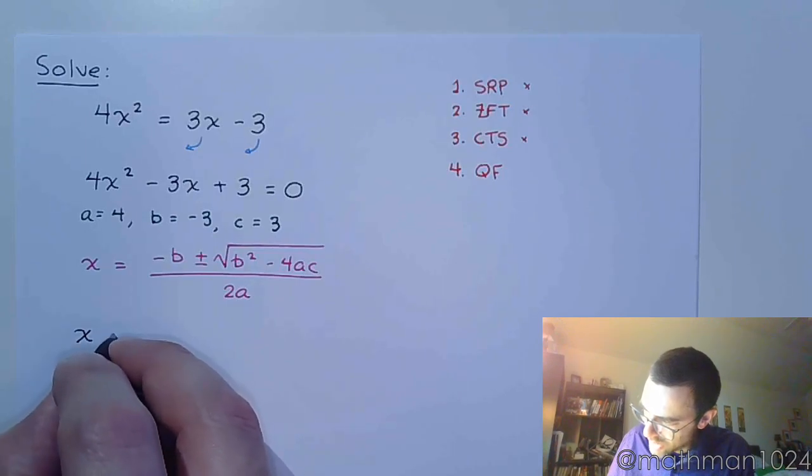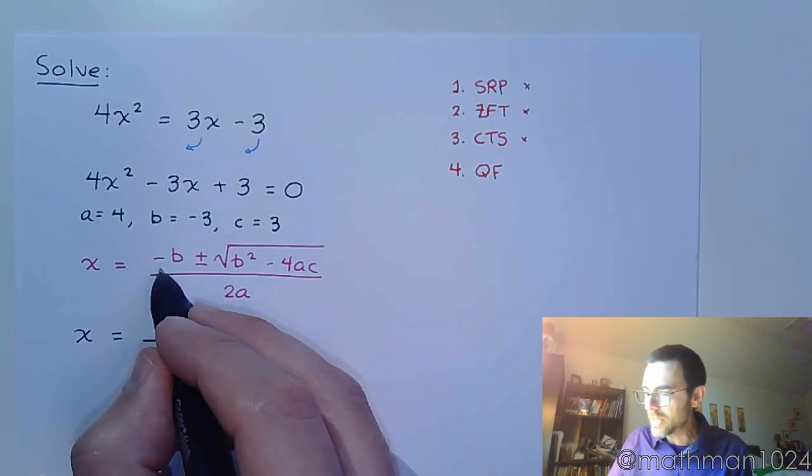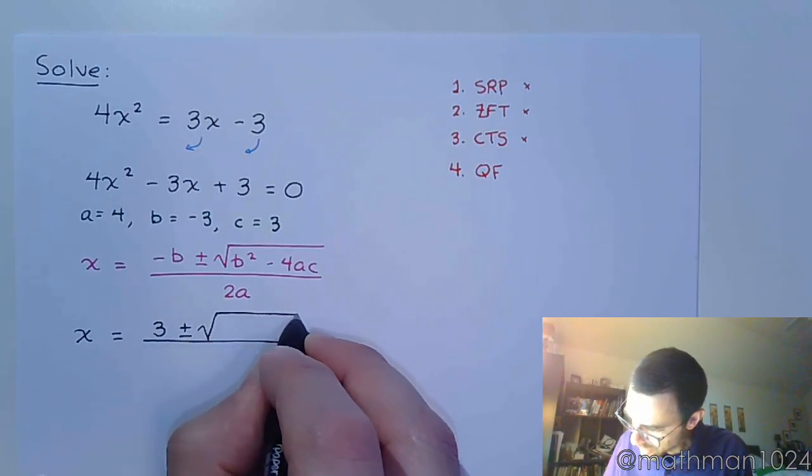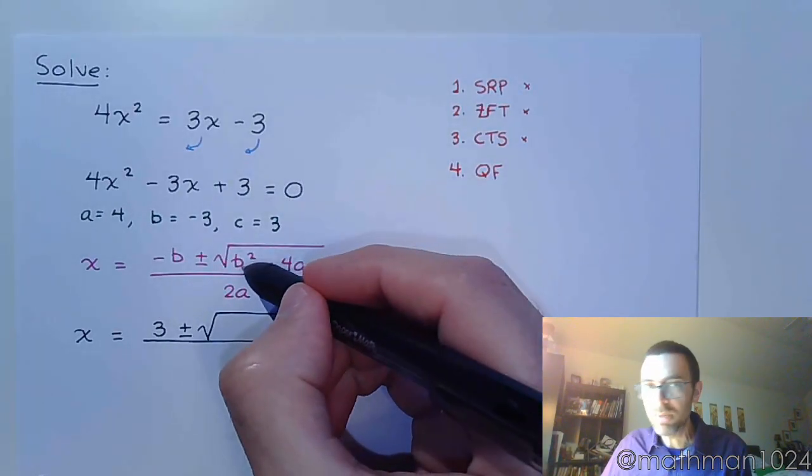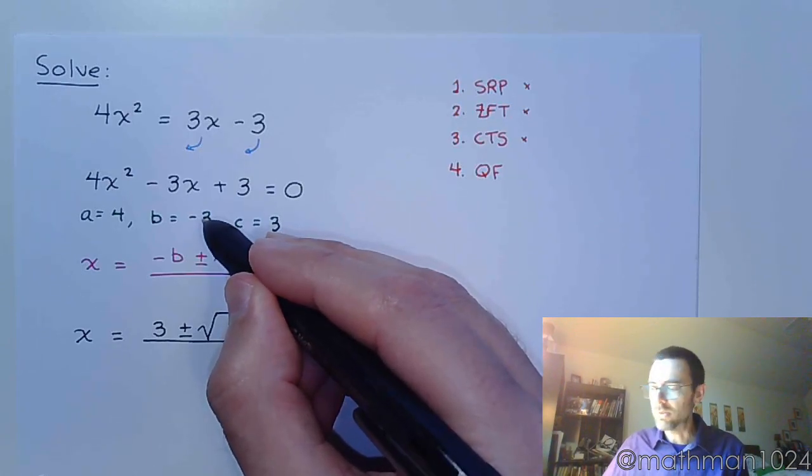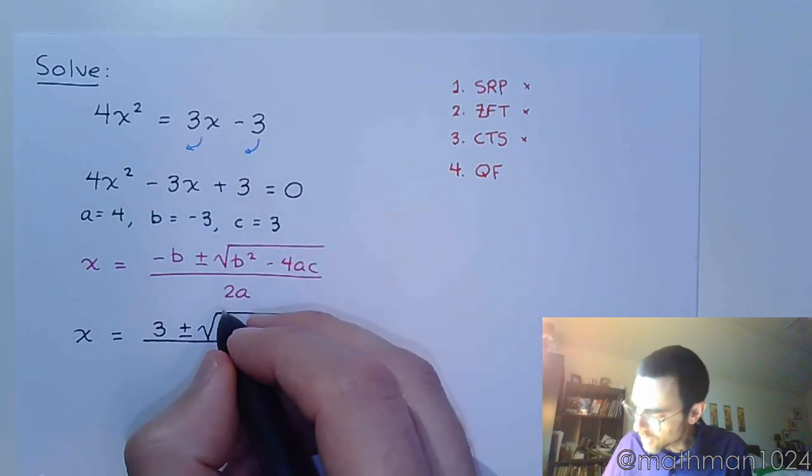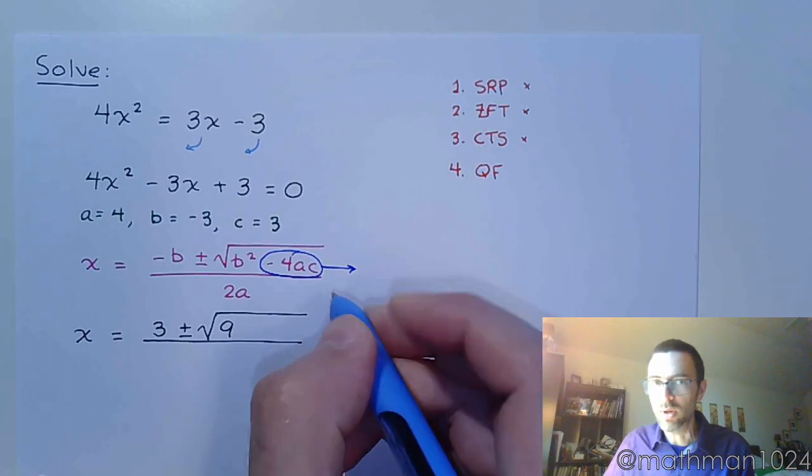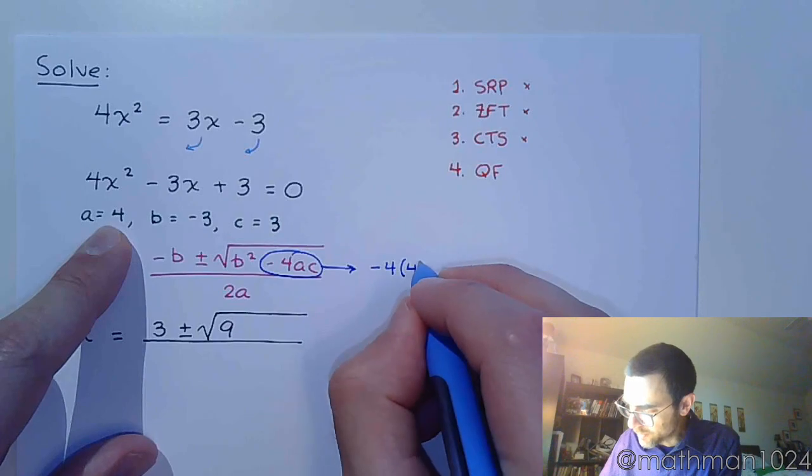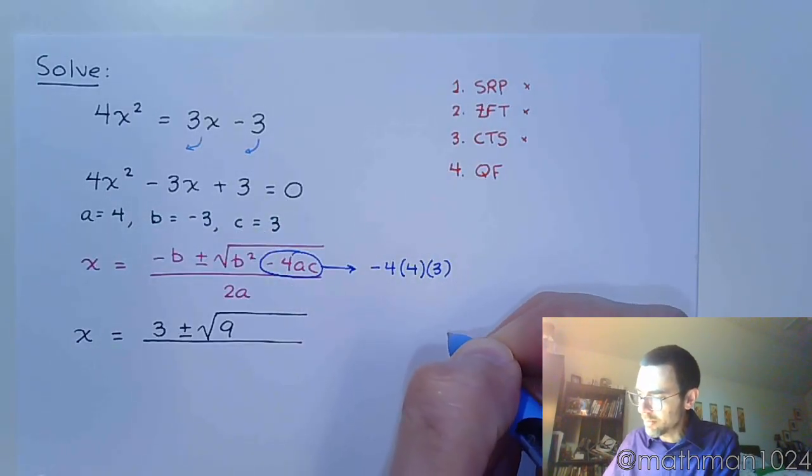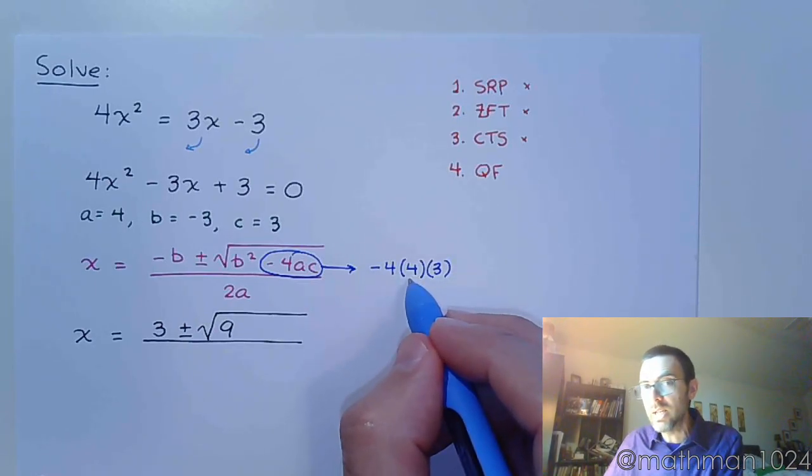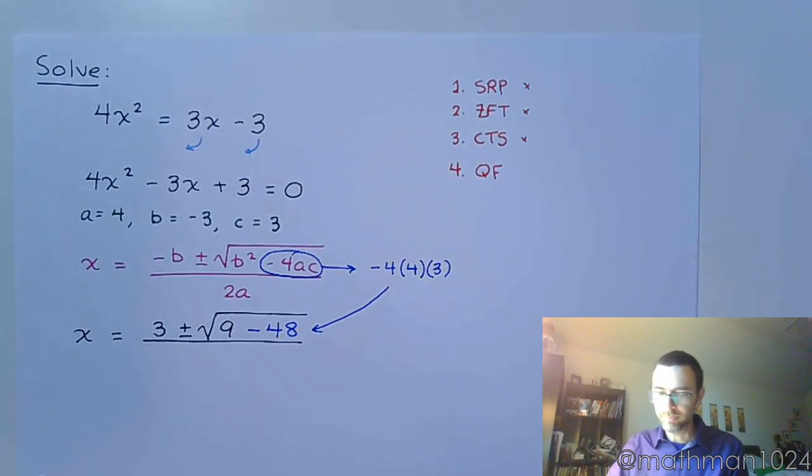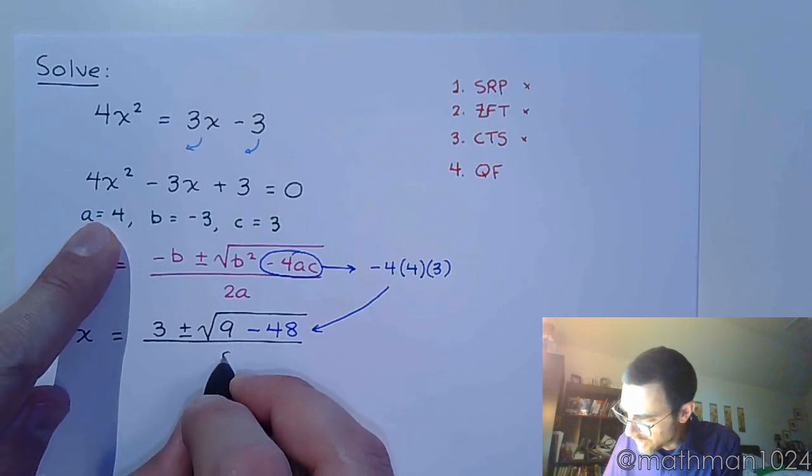All right, so we have x is equal to, fraction, negative B. Well let's see, B is already negative, so that makes this a positive 3 plus or minus the square root. Now pay attention here. This is B squared. And even though B is negative, when you square a negative you get a positive. So B squared is always going to be a positive number. So negative 3 squared is positive 9. And just like we did in the last example, we're going to take this minus 4AC off to the side to work this out. So it's negative 4 times A, 4, times C, which is 3. All right, so negative 4 times 4 is 16, negative 16. Negative 16 times 3 is negative 48. And this is all divided by 2A, so A is 4. 2 times 4 is 8.